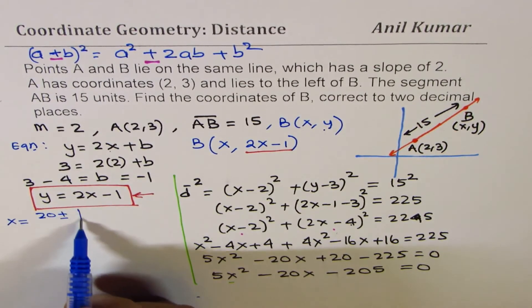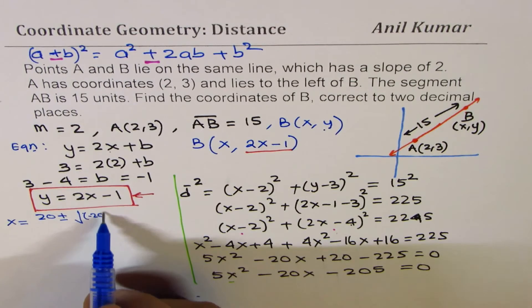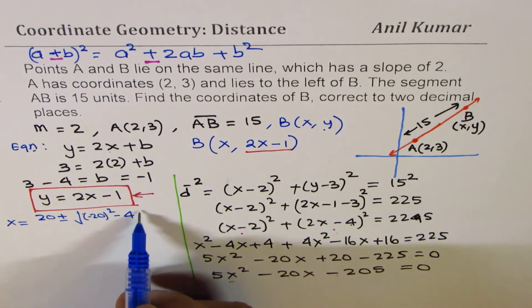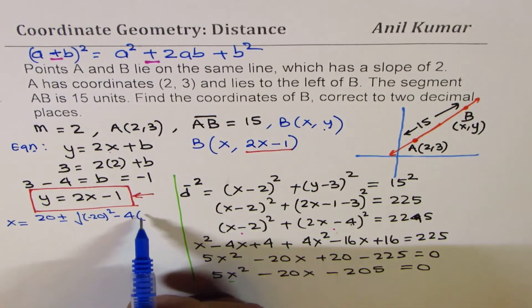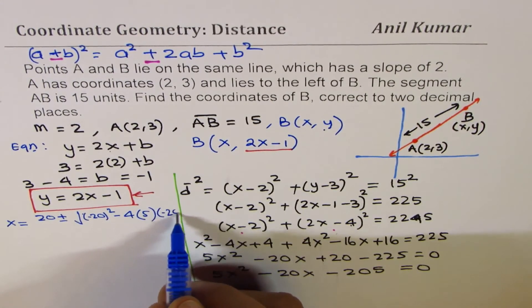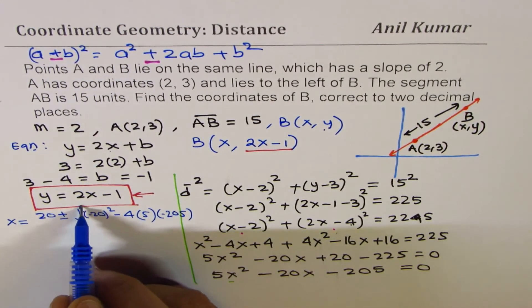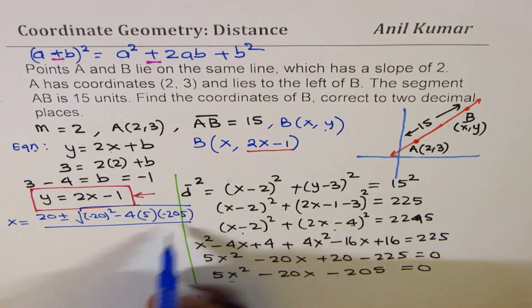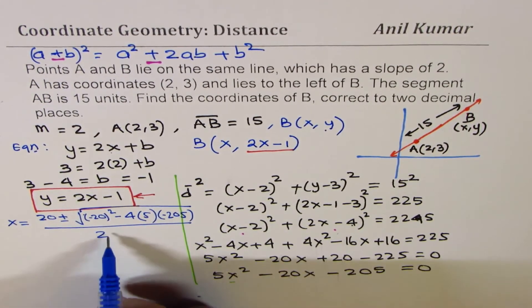Plus minus b², which means (-20)² - 4 times ac. a is 5 and c is -205. Divided by 2 times a, which is 5.